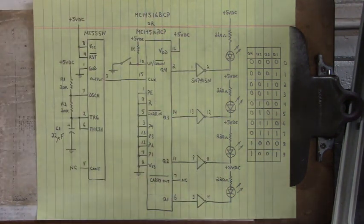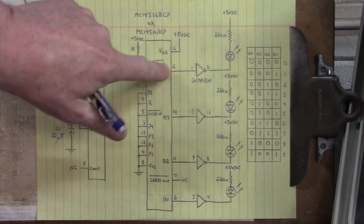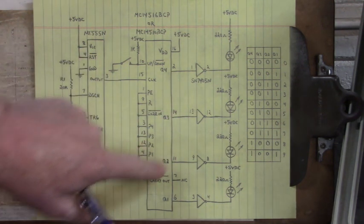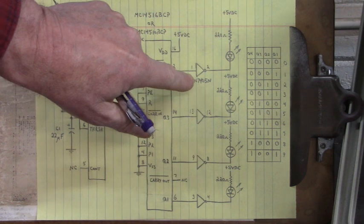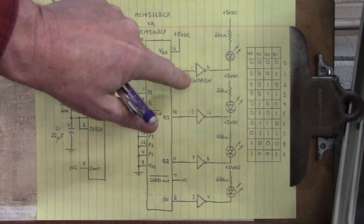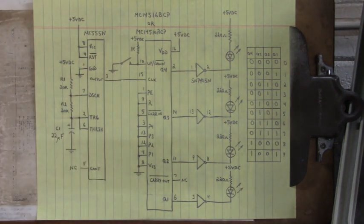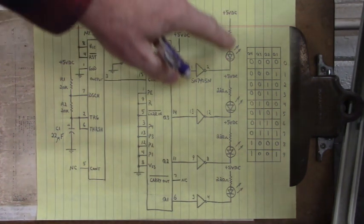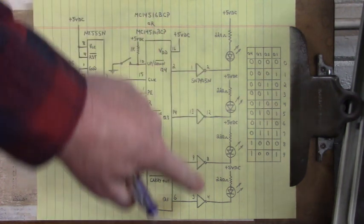The outputs of both these up-down counter ICs, Q4 on pin 2, Q3 on pin 14, Q2 on pin 11, and Q1 on pin 6, they drive into an open collector output inverter and that's SN7405N. You want open collector so that you can pull current through that LED at the output of these inverters.